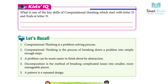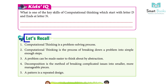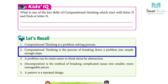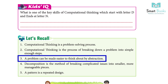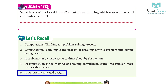Kids IQ: what is the key skill of computational thinking which starts with the letter D and ends with the letter N? Let's recall: 1) Computational thinking is a problem-solving process. 2) Computational thinking is the process of breaking down a complex problem into simple enough steps. 3) A problem can be made easier to think about by abstraction. 4) Decomposition is the method of breaking a complicated issue into smaller, more manageable pieces. 5) A pattern is a repeated design.